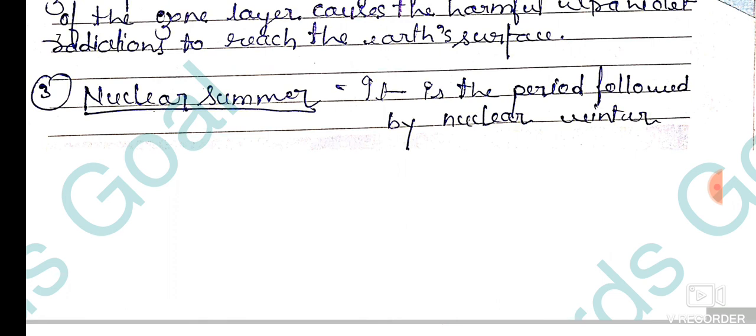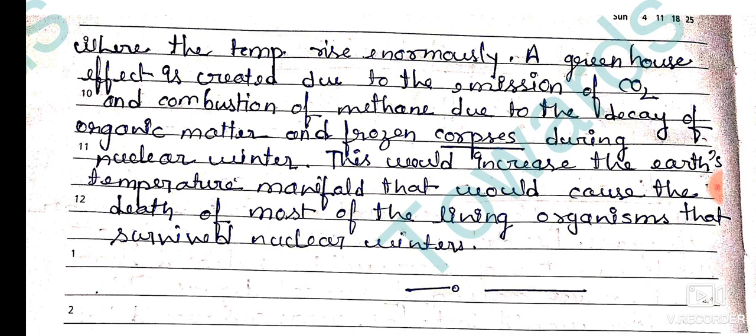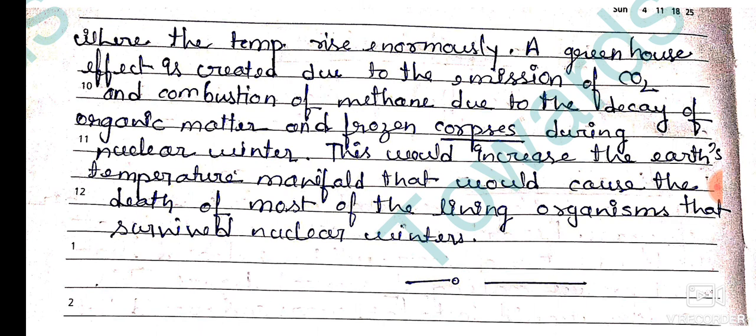Nuclear summer kya hota hai — it is the period followed by nuclear winter where the temperature rises extremely. A greenhouse effect is created due to the emission of carbon dioxide and combustion of methane due to the decay of organic matter.